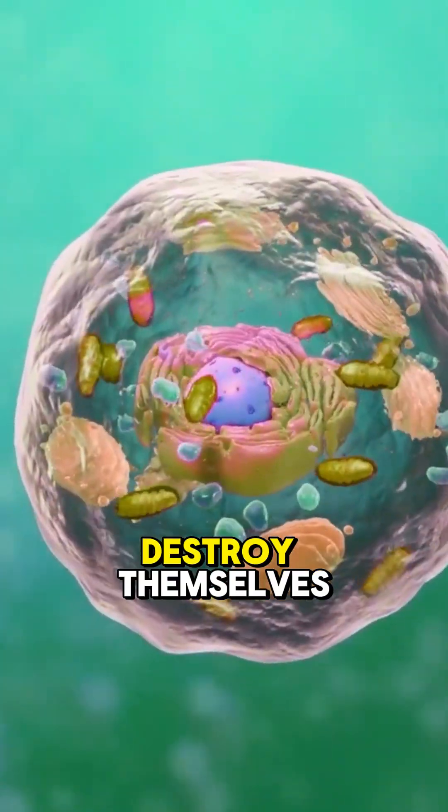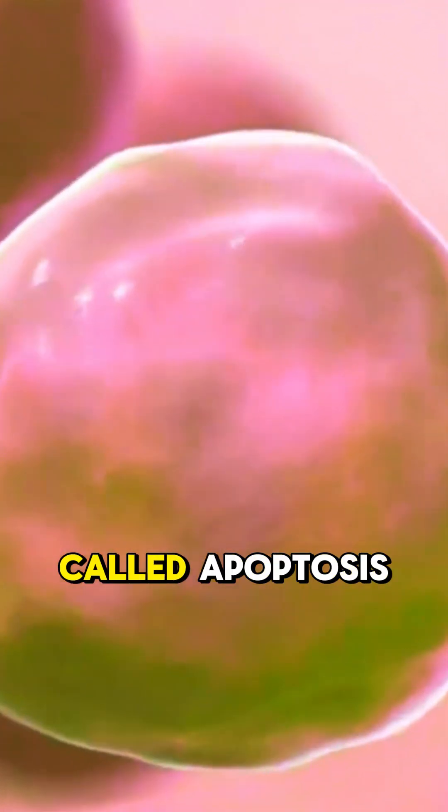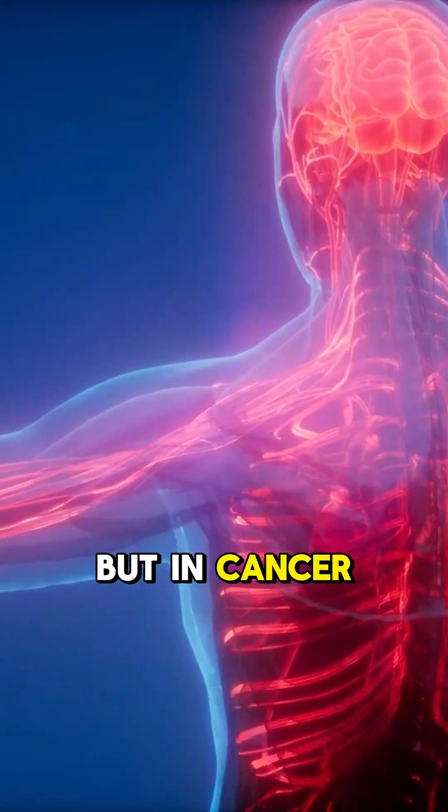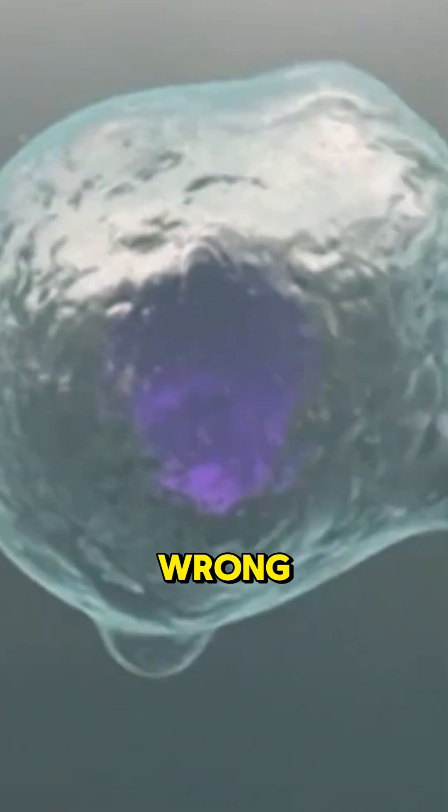Old cells usually destroy themselves in a process called apoptosis, making room for healthy ones. But in cancer, this process goes wrong.